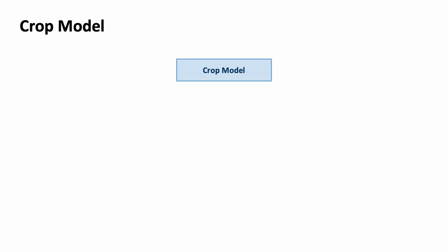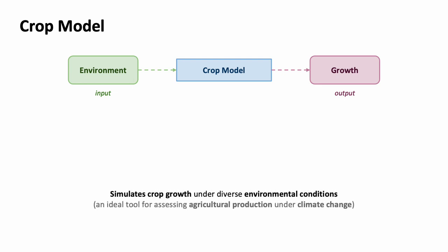The idea of crop model came from agronomy, where it takes environmental data as input and simulates the growth of crop plants as output. It has a quite long history of development for more than four decades and is getting more attention recently as an important tool for assessing the impact of climate change on agriculture.